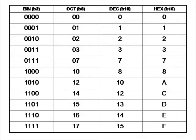The binary, octal, decimal, and hexadecimal systems are the four most popular numbering systems, but there are an infinite number that can be used. These four are just used very often in computers and are vital to understanding digital design and engineering, especially the binary system.